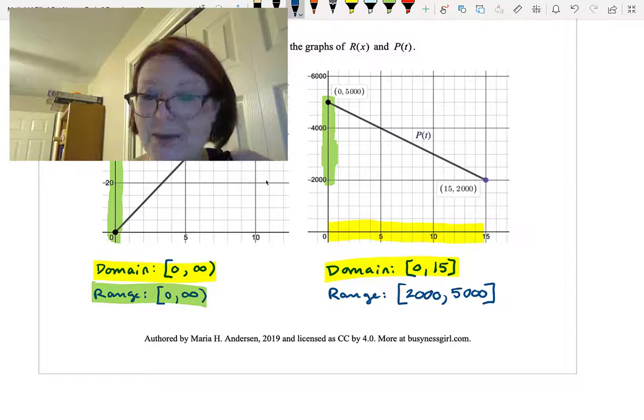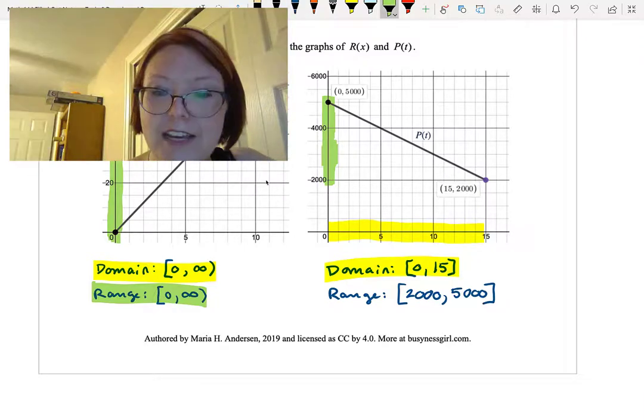So left bracket 2000 comma 5000 right bracket. And again, that corresponds to the y-axis values.